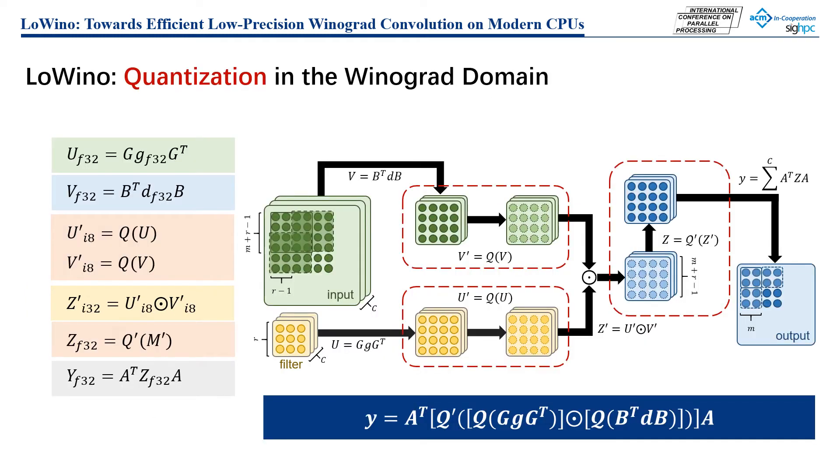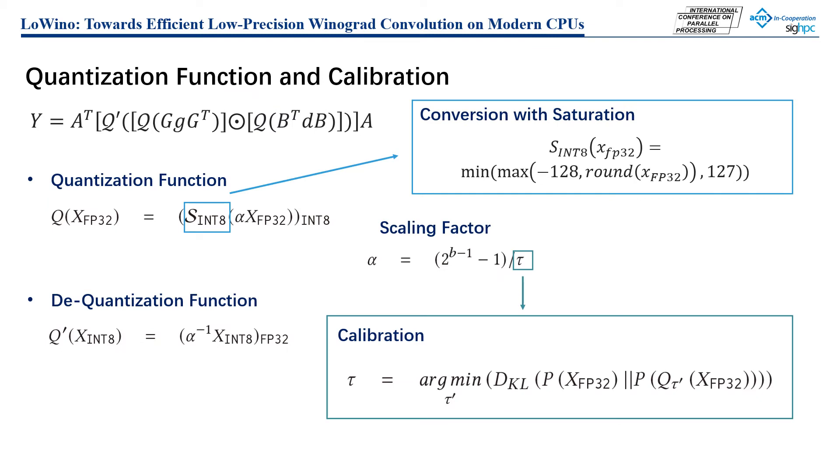This motivates us to explore an effective method to combine Winograd convolution and low-precision computations. In this paper, we propose a quantized Winograd convolution method, LoWino. We introduce quantization and dequantization operations in the Winograd domain to avoid the overflow problem while exploiting the capability of low-precision computations. We use a linear quantization function mapping FP32 values into INT8 values by multiplying a scaling factor. In addition, we use KL divergence to estimate the reasonable scaling factor to achieve less accuracy loss.